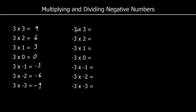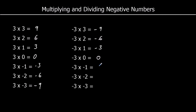Negative 3 times 3 is the same as 3 times negative 3, so that's negative 9. Negative 3 times 2 is negative 6. Negative 3 times 1 is negative 3. And you can see the pattern emerging — we're going up in 3 every time: 0, 3, 6, 9.